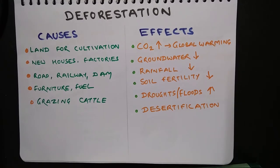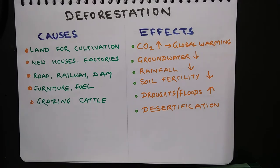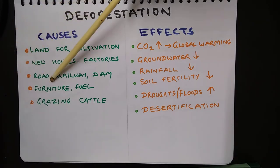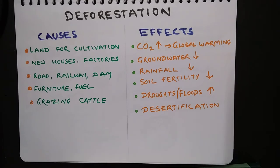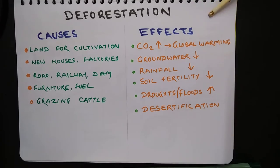Deforestation: clearing a forest for human needs is called deforestation. There are various causes. We need new land for cultivation to feed the ever-growing population. We need new houses and factories to be built, and new railway lines, roads, and dams are constructed, requiring land for which forests are cleared. Wood is required for making furniture and also for kitchen fuel in rural areas. Grazing of cattle is another important reason for deforestation.